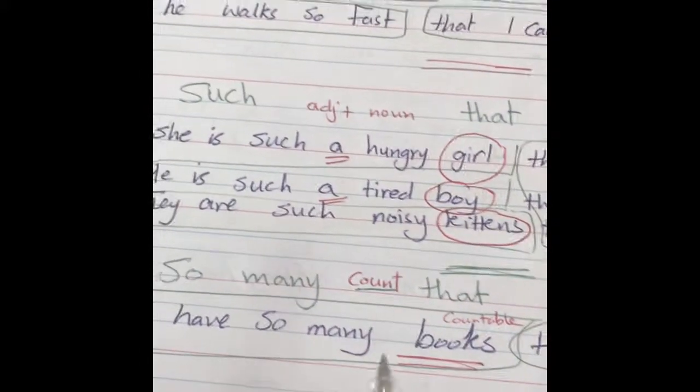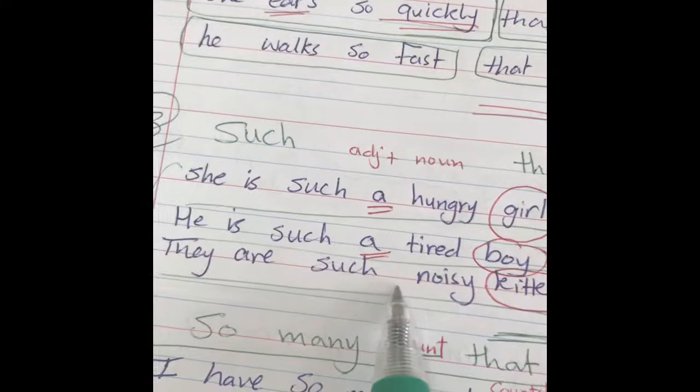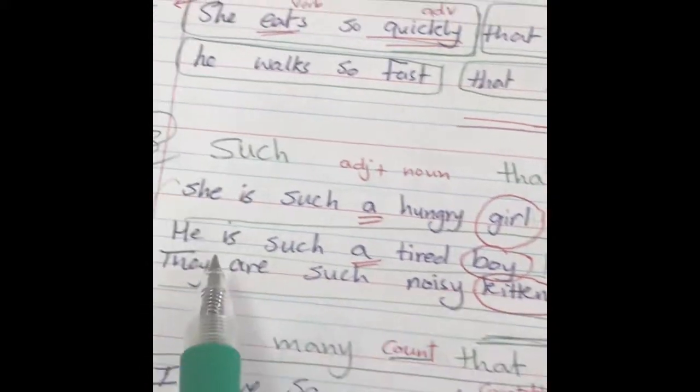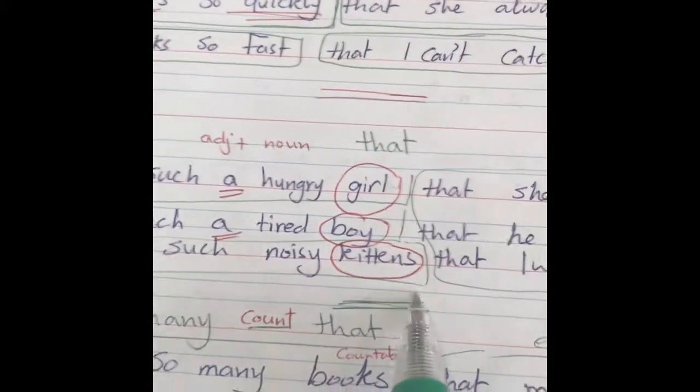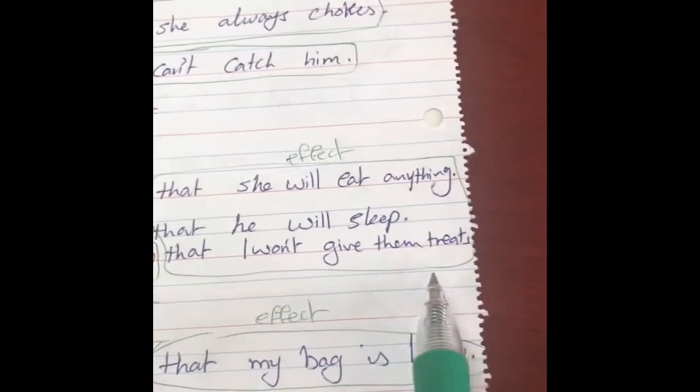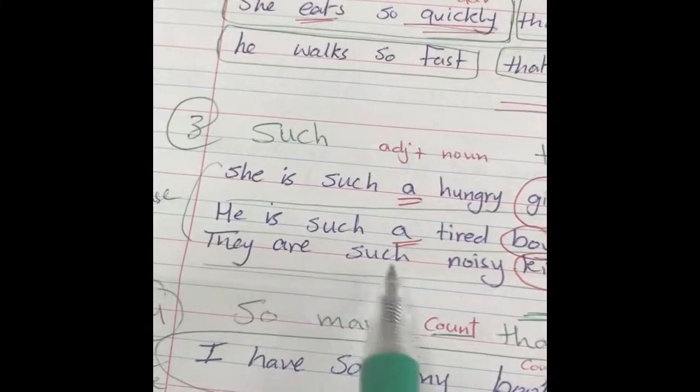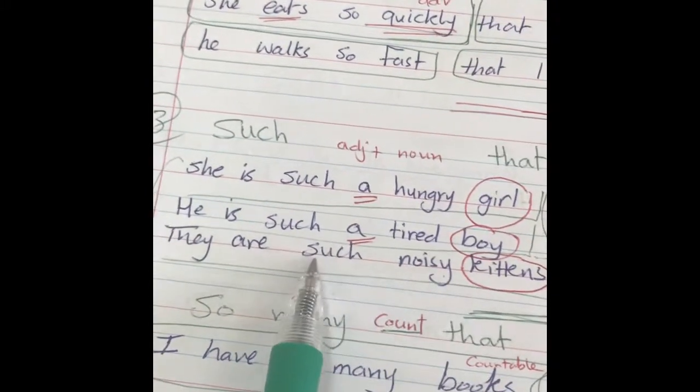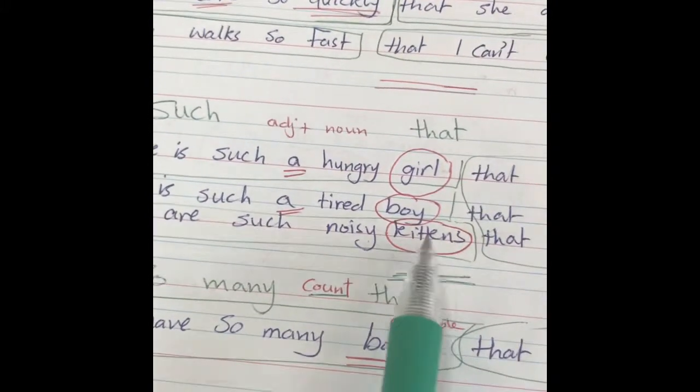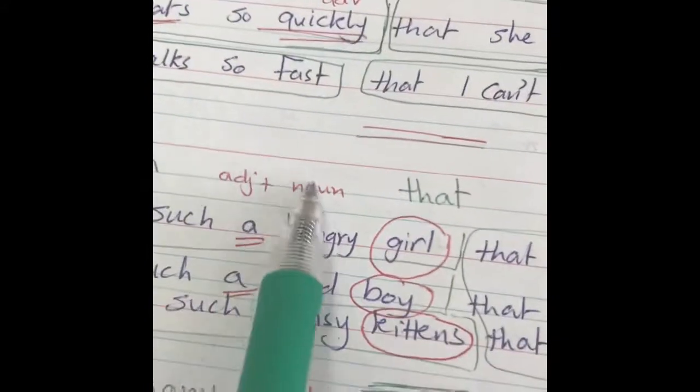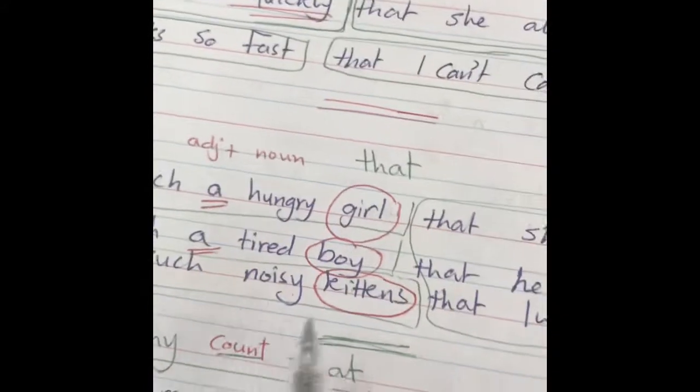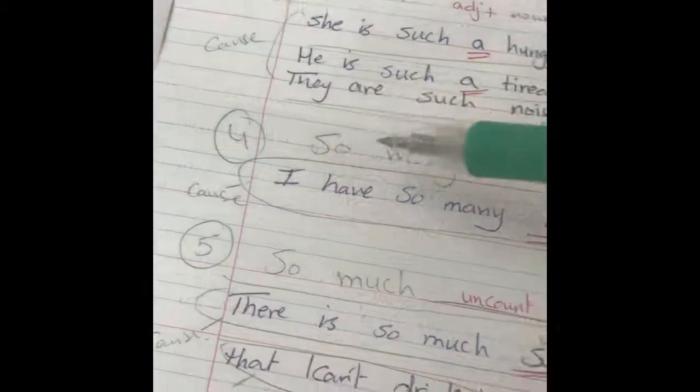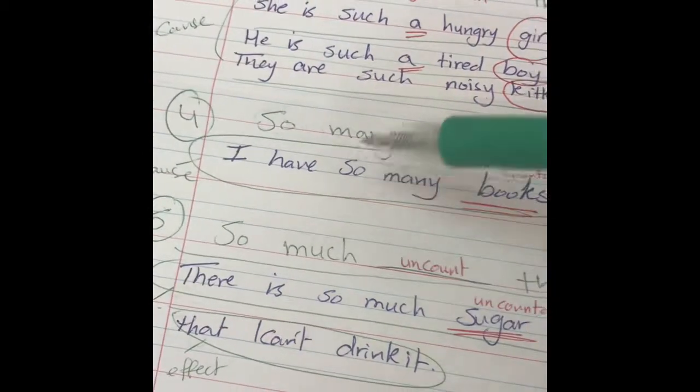They are such noisy kittens. Here I didn't put a because kittens is plural. So they are such noisy kittens that I won't give them treats. If there's no kittens here, they are so noisy. Because here I have a noun that shows this adjective.